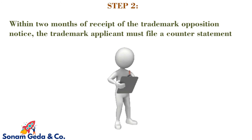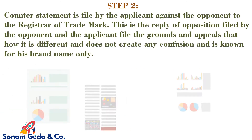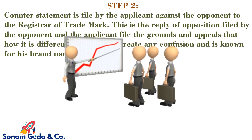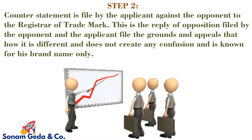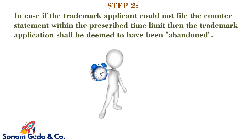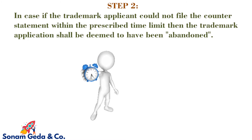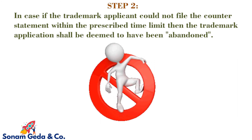Step 2: Within two months of receiving the trademark opposition notice, the trademark applicant must file a counter statement to the registrar of trademark. This is the applicant's reply to the opposition, stating the grounds and appeals — how the mark is different, does not create any confusion, and is known for its brand name only. If the applicant fails to file the counter statement within the prescribed time limit, the trademark application shall be deemed to have been abandoned.